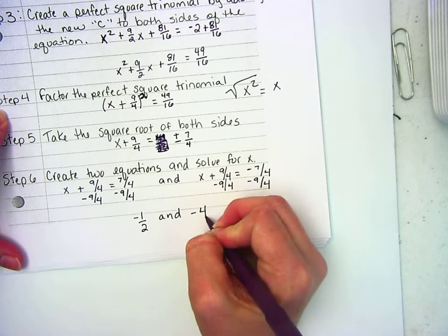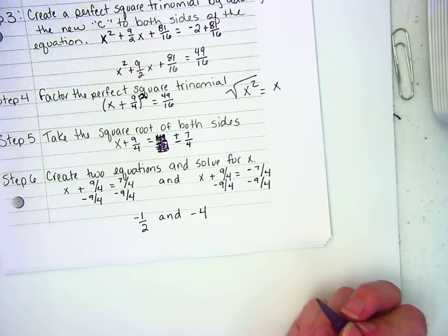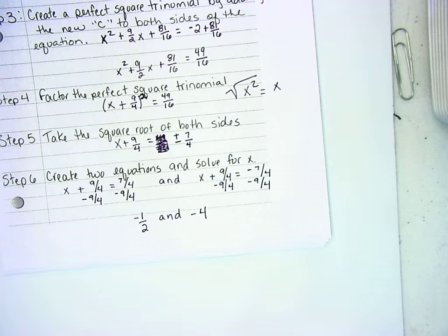Negative 4. So your parabola crosses the x-axis at both negative 1/2 and negative 4.